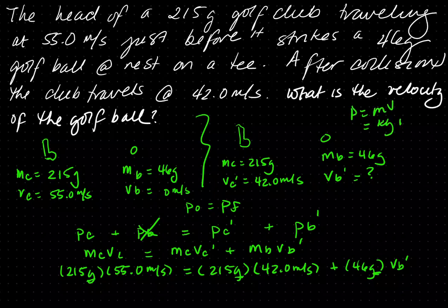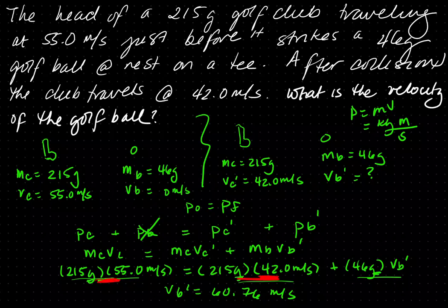The SI unit for mass is kilograms and velocity is meters per second. The reason I did not convert is because grams appear in every single portion of the momentum quantities, so the unit cancels out. You can convert it, but it will cancel out — so if all the units are the same you can leave it as is. Solving for the final velocity of the ball, you multiply both quantities, subtract the right side term from the left side, then divide by 46. VB prime becomes 60.76 meters per second. Since momentum at the beginning was positive, momentum at the end is positive, which is why we have a positive velocity.